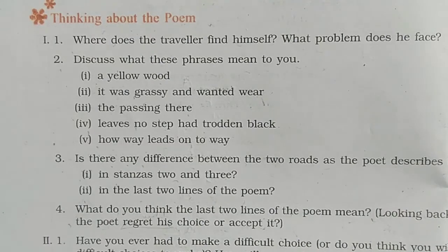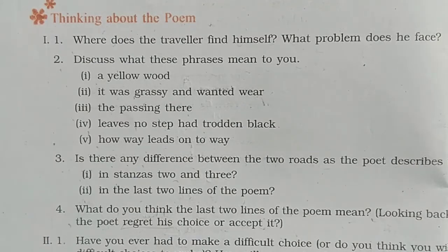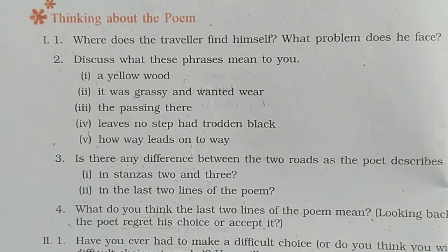Fourth, 'leaves — no step had trodden black' means the leaves had not turned black because no one had trampled them yet. Fifth, 'how way leads on to way' — as one moves, one road leads to another, and one goes farther and farther.